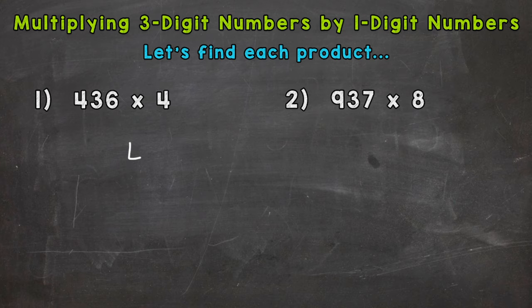So we can do 436 times 4. Now it's important that your places are lined up so notice that the 6 and 4 are lined up. That's because they're both in the ones place. Now that we're set up we're ready to multiply.